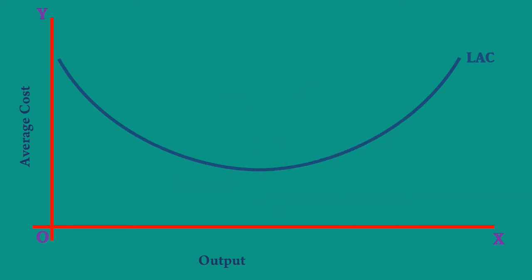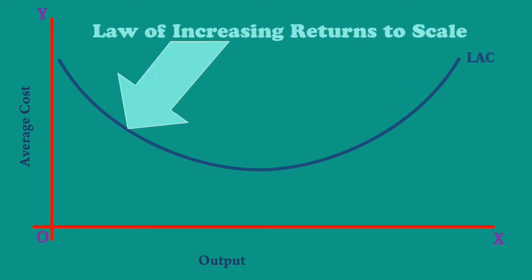The Long Run Average Cost Curve falls in the beginning. This is due to the operation of the Law of Increasing Returns to Scale. In this segment, the output increases more than proportionately for a given proportionate increase in inputs.